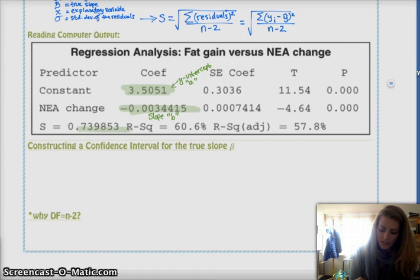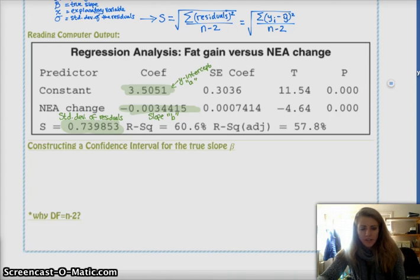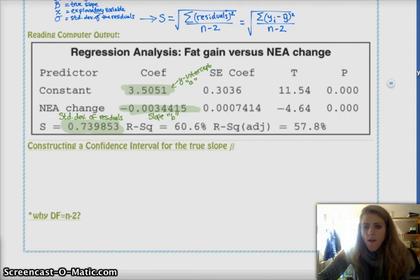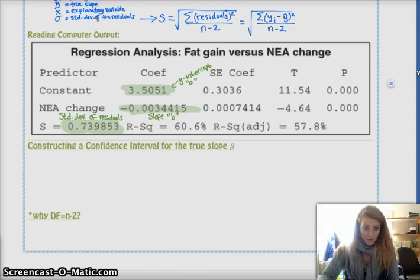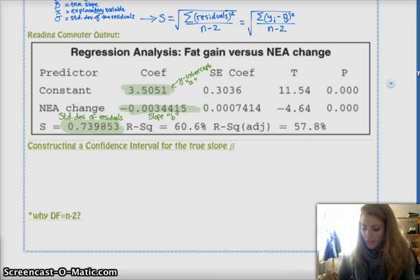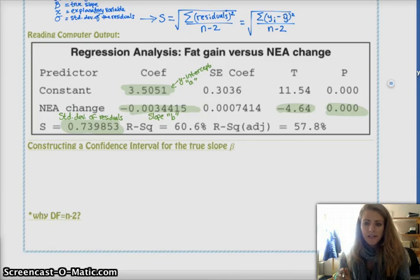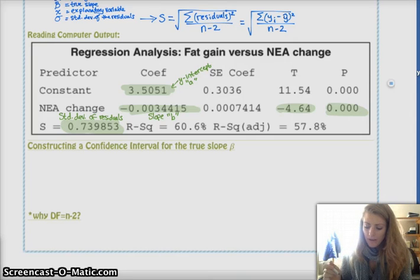S is your standard deviation of your residuals. Obviously, R-square is R-squared. R-squared adjusted, we don't really have to deal with. They also, this is for hypothesis tests, so not for today, but they also happen to give you your T value, your test statistic, and your P value for the given test. We're not using that today, but just so you have that.